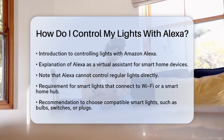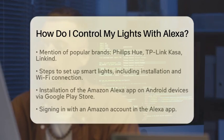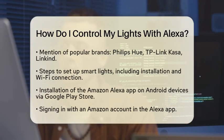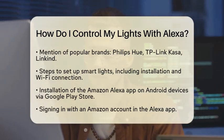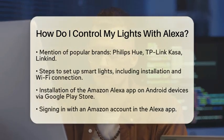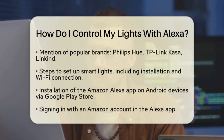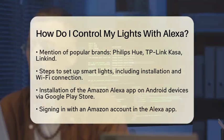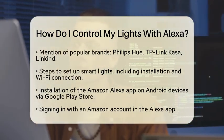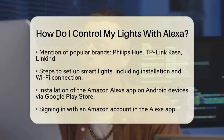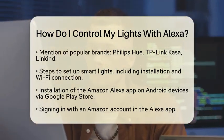Next, set up your smart lights. Install the bulbs or switches according to the manufacturer's instructions. After that, connect them to your home Wi-Fi network using the manufacturer's app. This step is essential for Alexa to communicate with your lights.